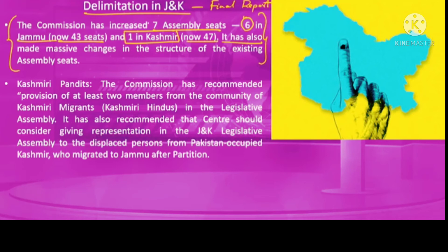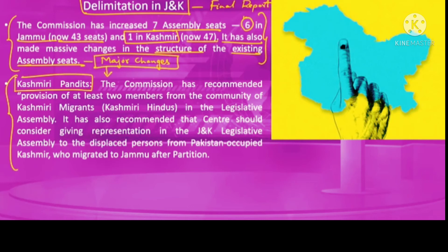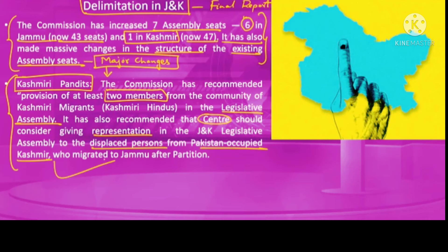To accommodate these changes, the delimitation commission has redrawn the boundaries of several constituencies, leading to major changes. It has also provided for reservation of two seats for Kashmiri Pandits who have been internally displaced, to ensure adequate representation in the legislative assembly. The commission has additionally recommended that the center provide representation for people displaced from Pakistan-occupied Kashmir who migrated to the Jammu region after partition.